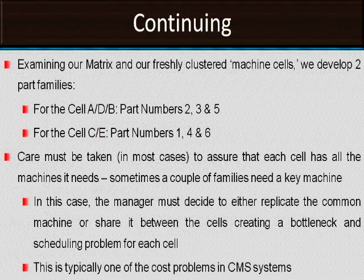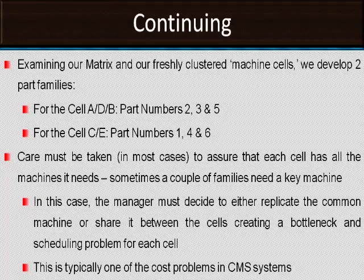From the previous matrix, we can formulate a cell with machines A, D, and B. The corresponding part family is parts 2, 3, and 5. Similarly, another cell can be formulated using machines C and E, with the corresponding part family being parts 1, 4, and 6. We must ensure that each cell has all the machines it needs. Sometimes a couple of families need a key machine. In this case, the manager must decide whether to replicate the common machine or share it between two cells, which creates bottleneck and scheduling problems.